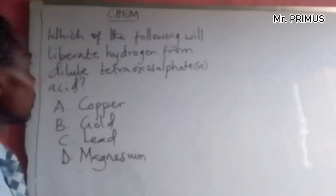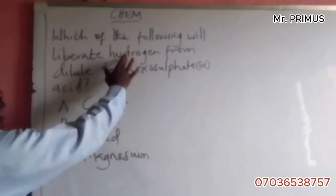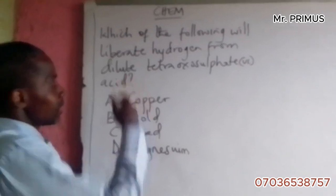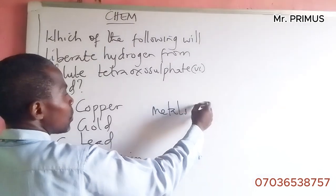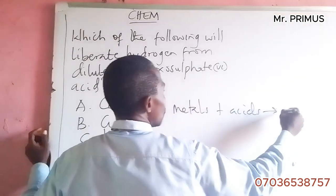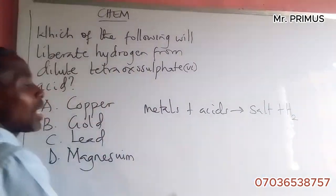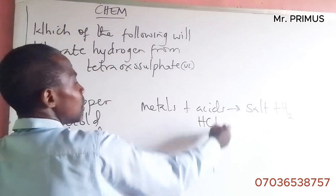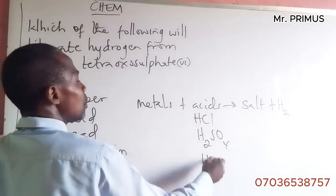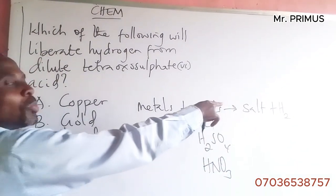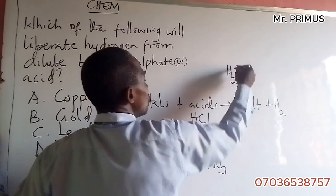This is chemistry. In our last video, I taught you about the liberation of hydrogen in the reaction with acids. Metals react with dilute acids to produce a corresponding salt and hydrogen. If it is HCl you get this; if it is H₂SO₄ you get hydrogen; but if it is HNO₃, it will oxidize this hydrogen to H₂O — these are oxidizing agents.